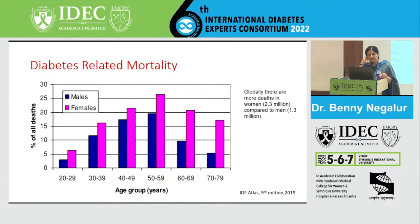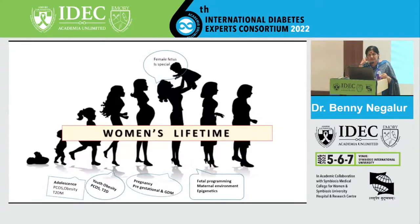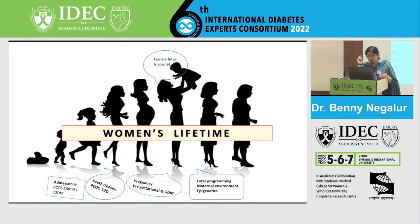Women suffer more when diabetic because they have a life cycle that men do not. It starts from childhood — we are the second largest childhood obesity nation in the world. These youngsters will suffer from obesity, PCOS, and problems with pregnancy, including pre-gestational diabetes, which will produce a progeny with NCDs in future pregnancies as well.